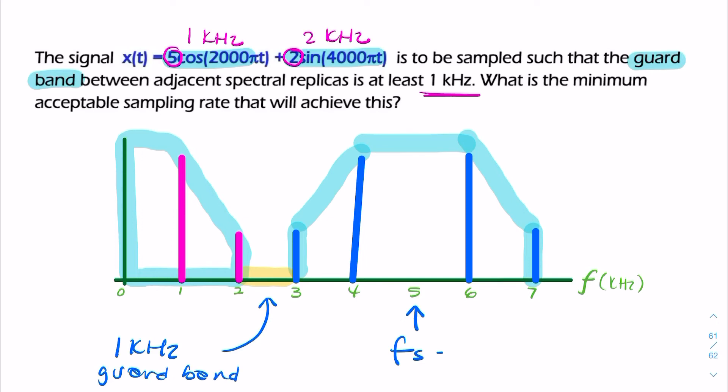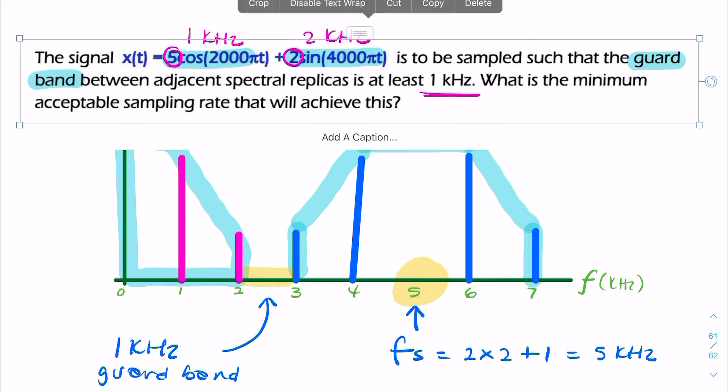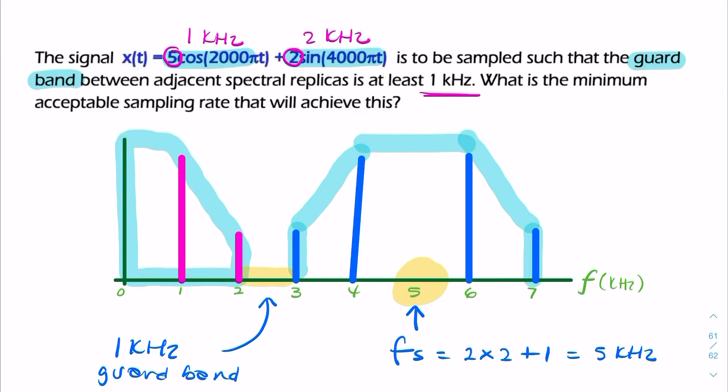And to achieve that, the sample rate would have to be the Nyquist rate, which is 2 times 2, plus the guard band. So it's a 5 kilohertz sample rate. To achieve a guard band of 1 kilohertz, I would need to sample at the Nyquist rate plus 1 kilohertz.